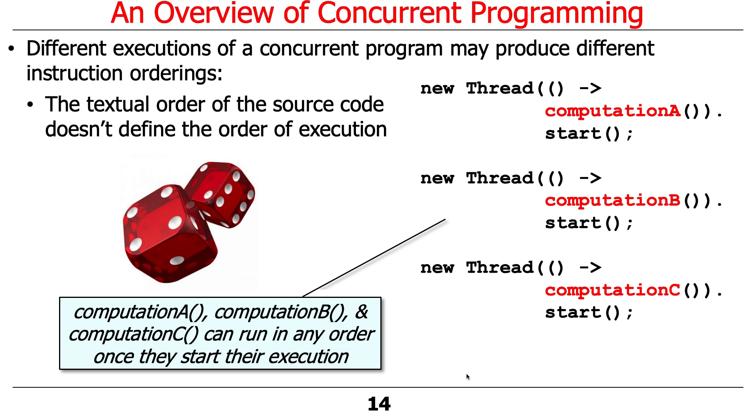Remember the example I showed you before where, for the get method in ArrayList, range check had to be called before we accessed the index location in element data? That was sequential. In this case, we're going to start three threads for computation A, computation B, computation C.